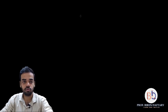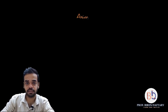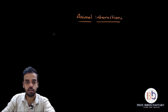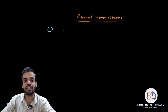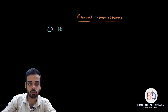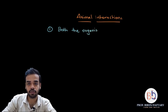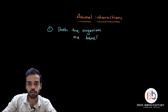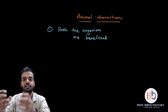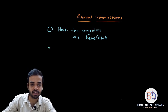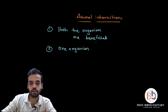Under animal interactions there are many different types, but there are basically three main categories. The first category is the one in which both organisms involved in the interaction are benefited. So if there is an interaction between two organisms and both are benefited, they belong to this first category.